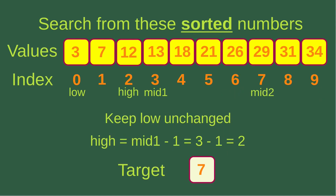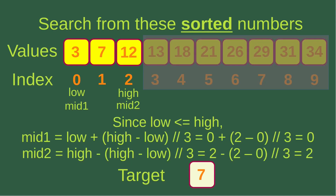Now we update the high index by subtracting one from mid one: three minus one equals two. And I also keep the low index unchanged. Since the low index is still smaller than or equal to the high index, I can update mid one and mid two according to the formulas on the second slide. So now mid one equals zero and mid two equals two. And in this case, I can ignore portions not including the low and high indices.